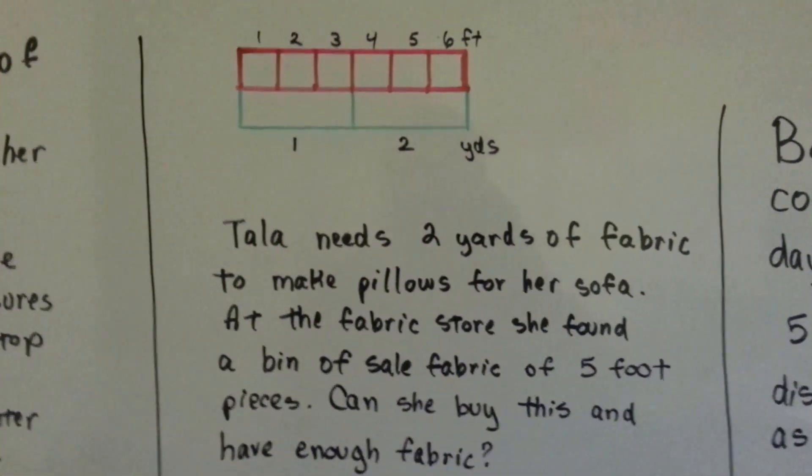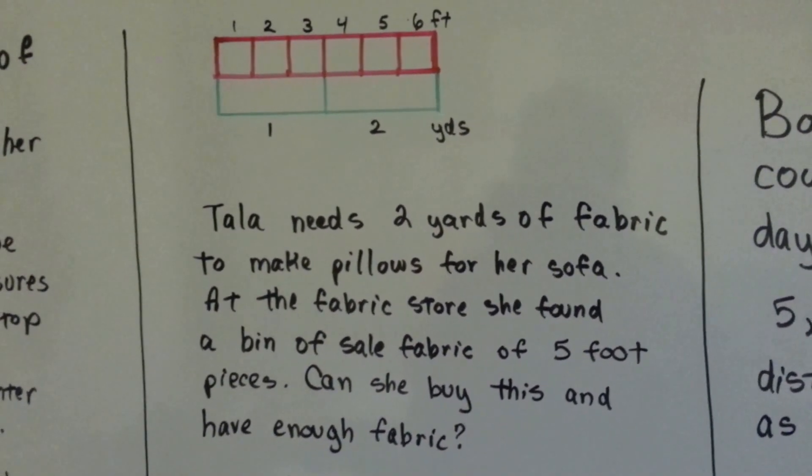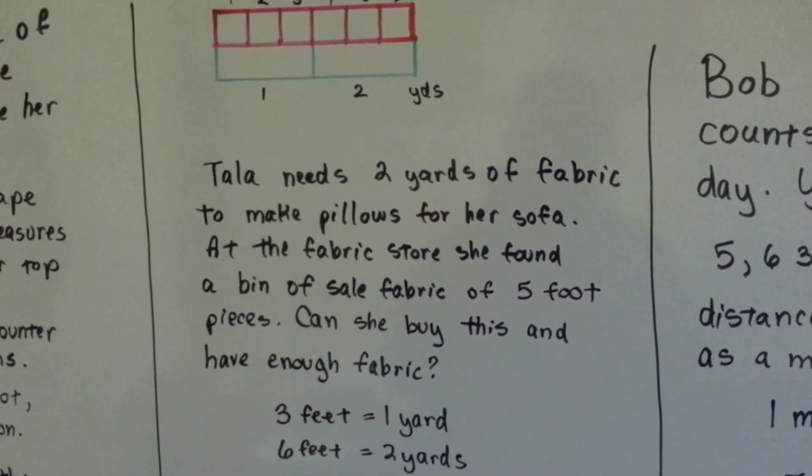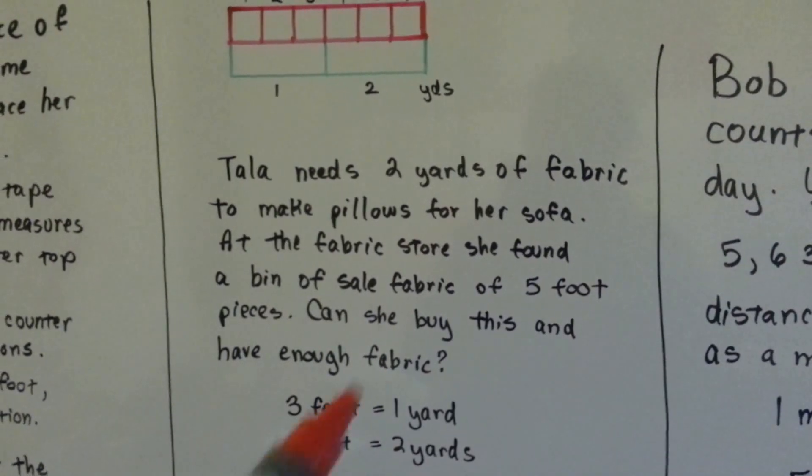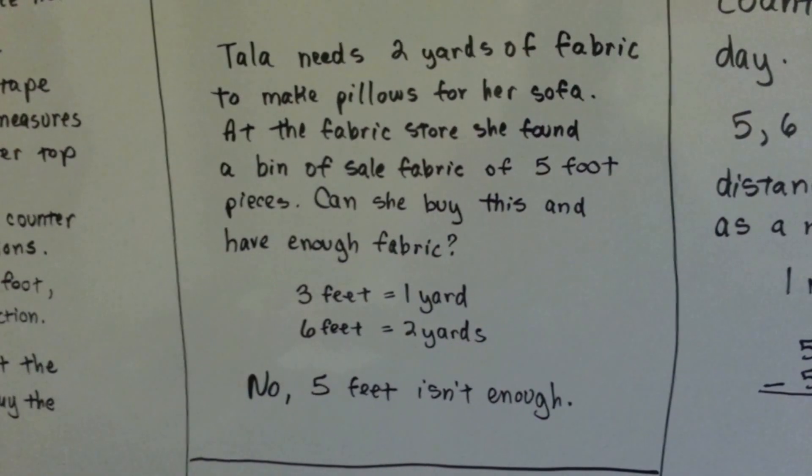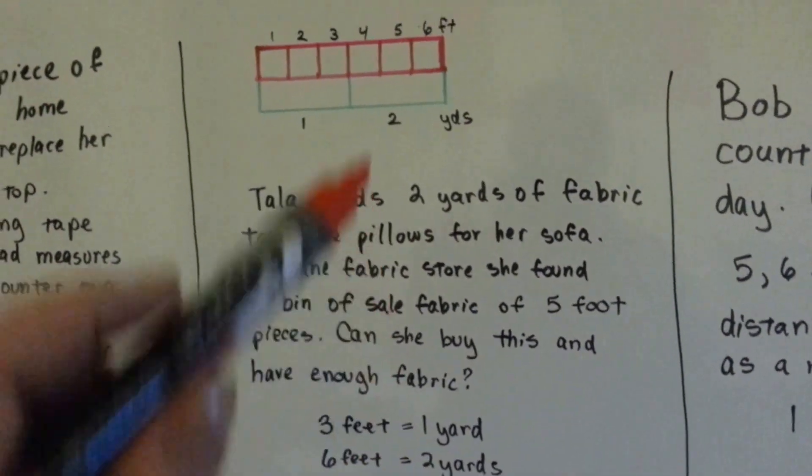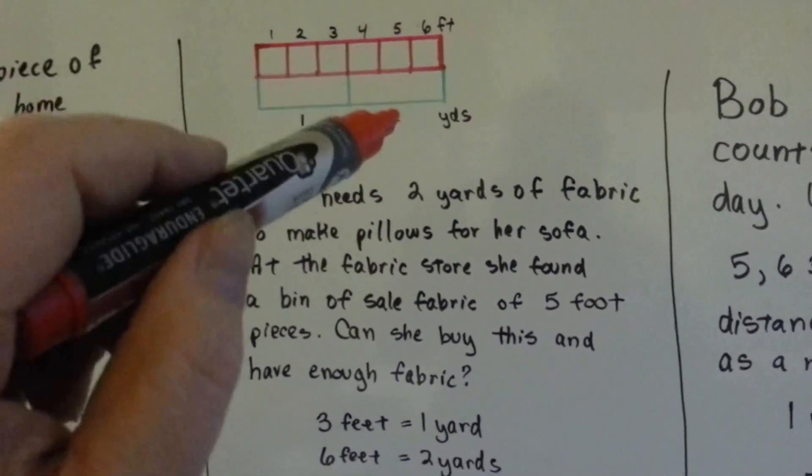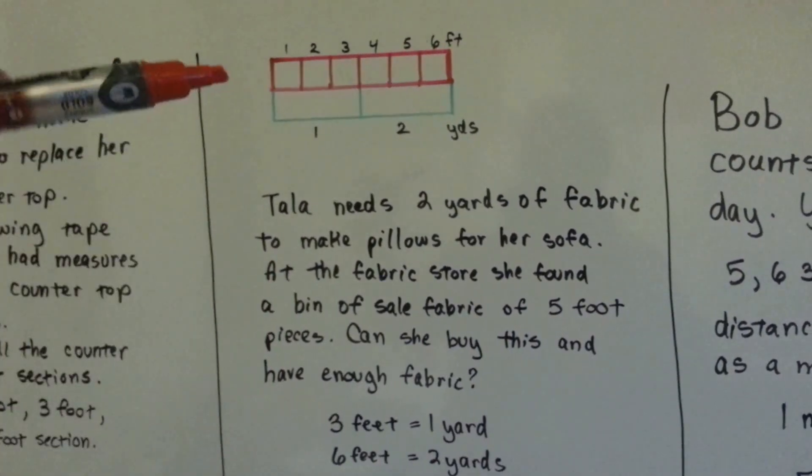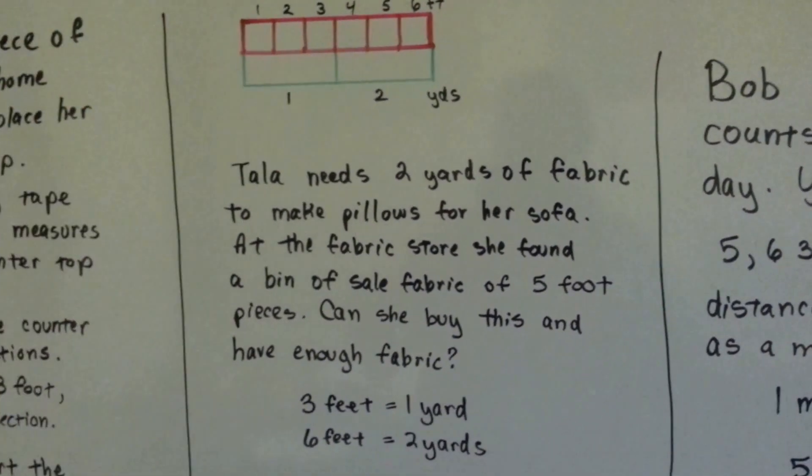Tala needs 2 yards of fabric to make pillows for her sofa. At the fabric store, she found a bin of sail fabric of 5 foot pieces. Can she buy this and have enough fabric? Well, 3 feet is 1 yard, 6 feet is 2 yards. If they're in 5 foot sections, that's not enough to be 2 yards. So no, 5 feet isn't enough. We converted it by multiplying, and we can also see if we put units next to each other, like yards and feet, as models, we can see the difference very clearly that 5 feet is not enough to be 2 yards.